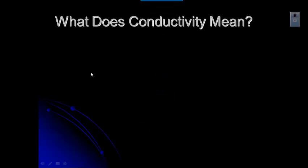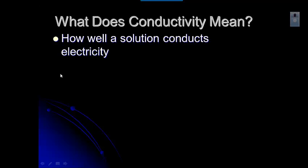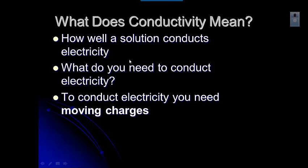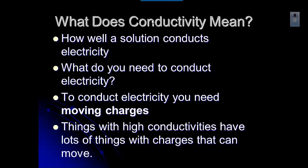Now let's talk about what the experimental results mean. Conductivity tells us how well something conducts electricity. In our case, we were interested in how well a solution of our compound conducted electricity. What you need is moving charges — electrons are moving charged particles, but they're not the only ones. Things with high conductivities have lots of charged particles that can move and carry charge from one place to another.